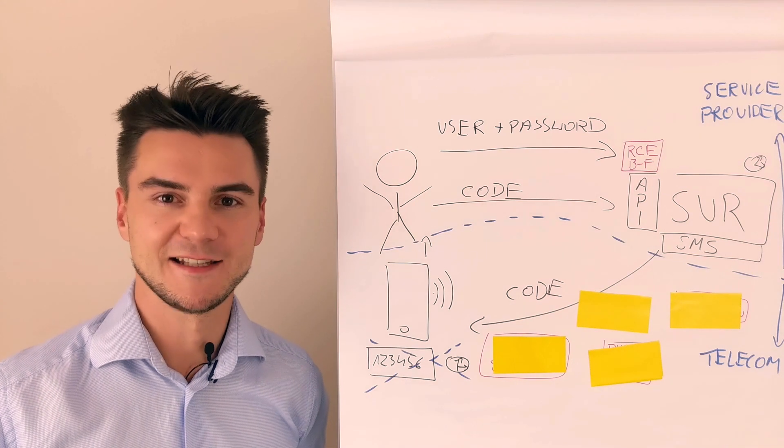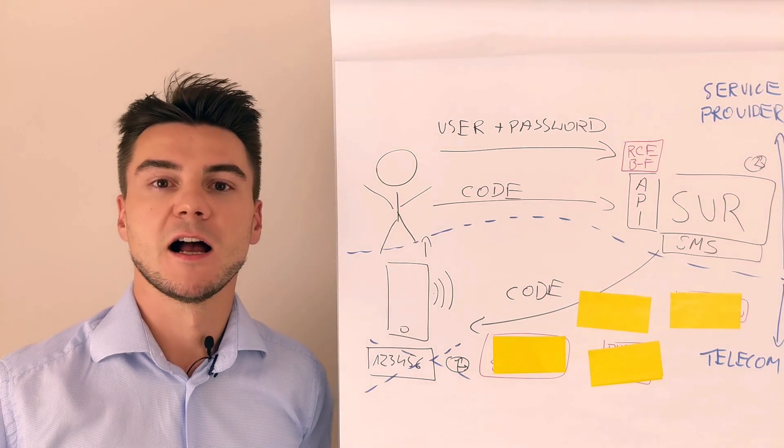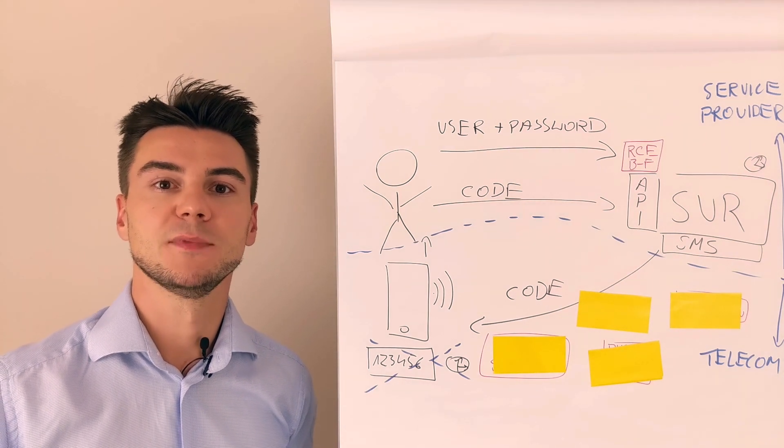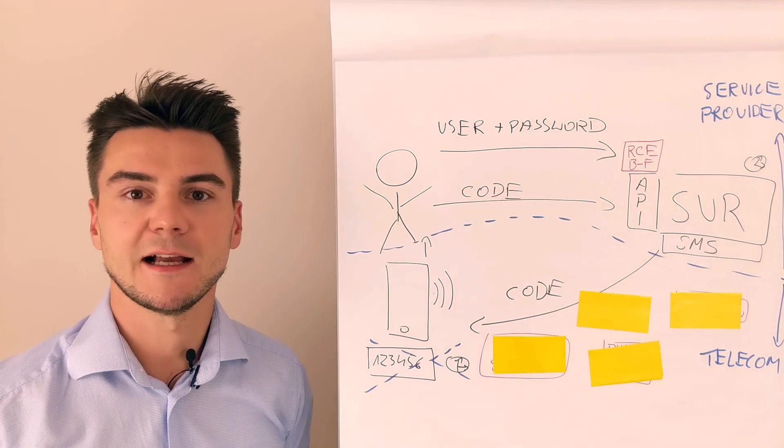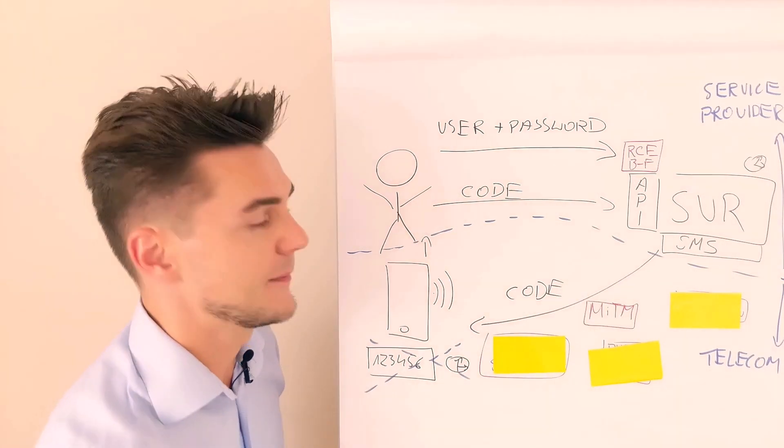Intercepting SMS codes is possible. There are multiple vulnerabilities, multiple attack vectors, ones that include downgrading the protocol being used by the phone or simply a man-in-the-middle attack on the protocol used by the phone. So we've got a man in the middle here.